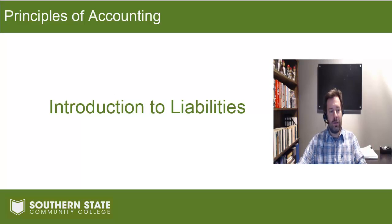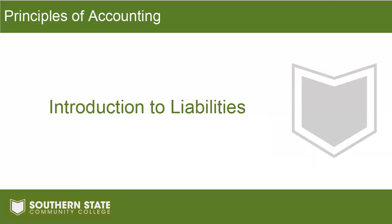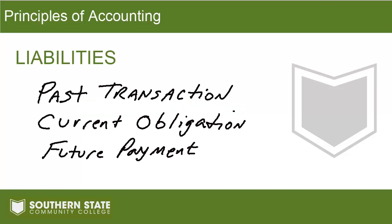Let's look at liability from a definition standpoint. A liability has three elements to it and it's a pretty straightforward idea. A liability is going to involve some kind of transaction that's already happened or an event, and it's going to make you currently obligated to pay an amount later on. For a liability to take place we have to have all three of those elements — if you're missing one you don't have a liability. I like to think of it in terms of my kid.